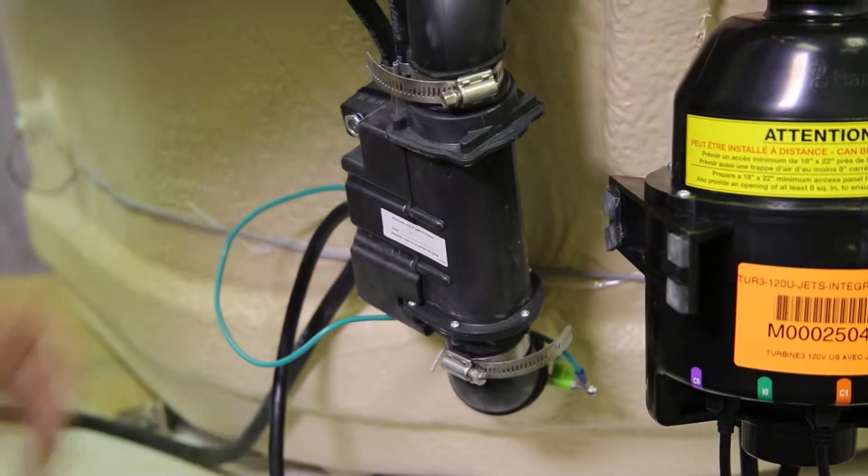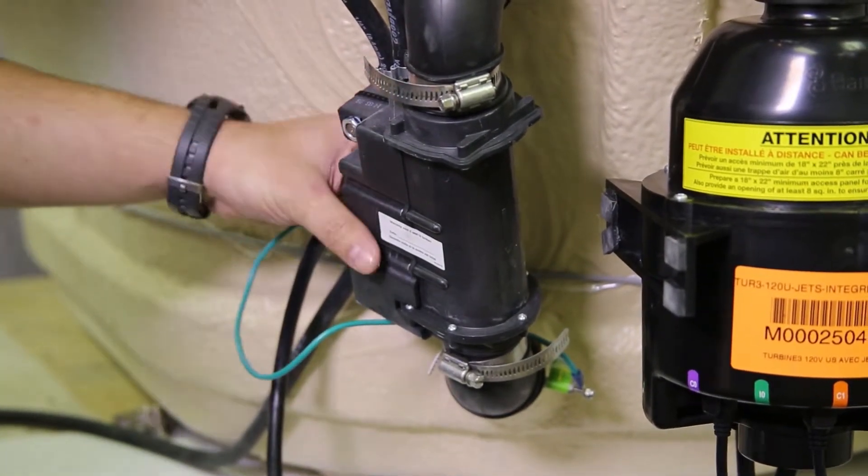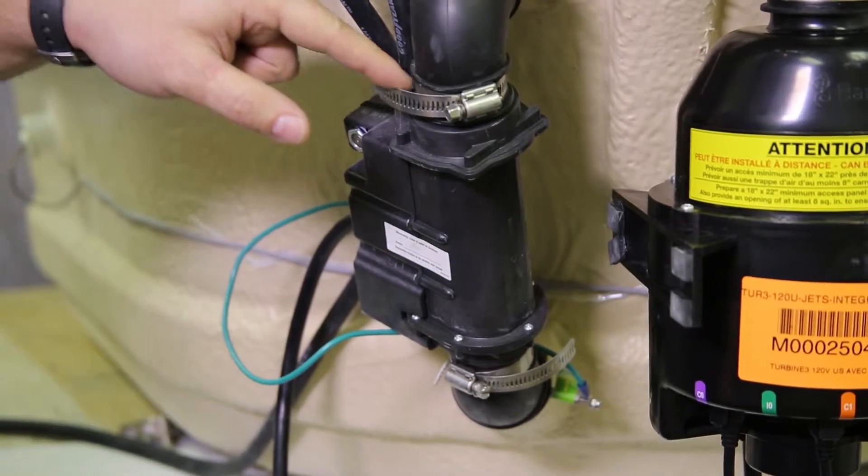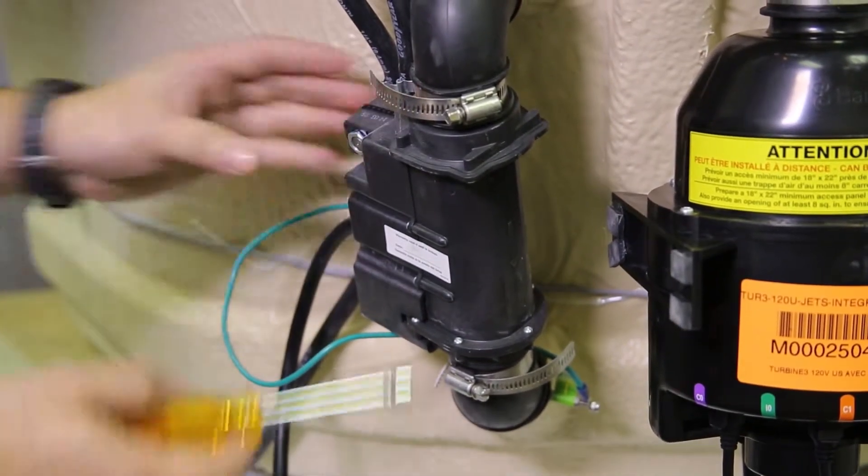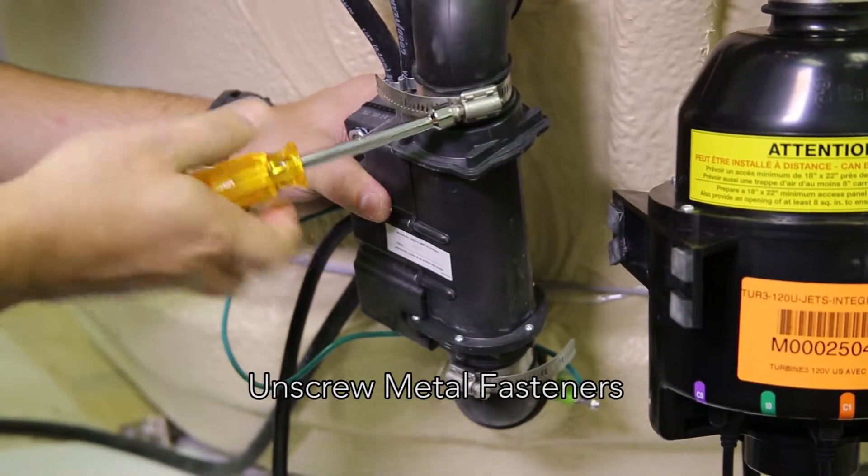So essentially what we need to do is keep in mind the position that it's in, and we can start unscrewing these fasteners. The ones that are closest to the part will make it easier to reinstall. Here we go, let me start unscrewing.